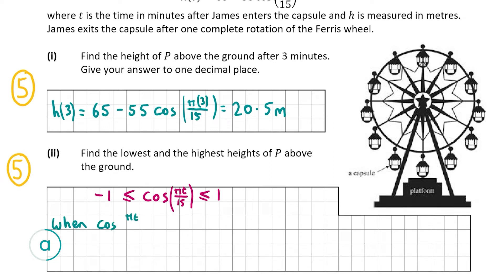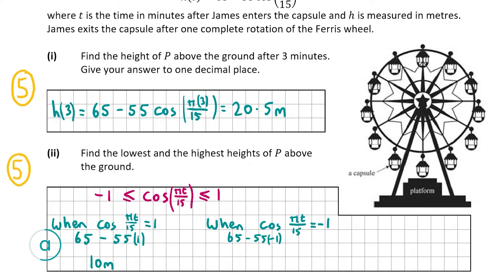When cos(πT/15) = 1, we get 65 minus 55 times 1, giving 10 meters. When cos(πT/15) = -1, we get 65 minus 55 times -1, which is 65 plus 55, giving 120 meters. Therefore the lowest height is 10 meters above the ground and the highest height is 120 meters above the ground.